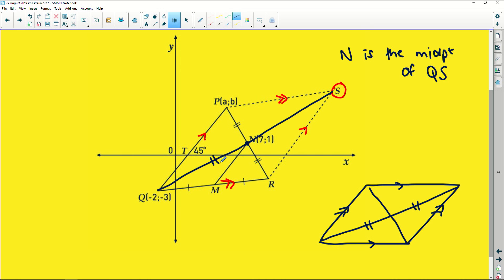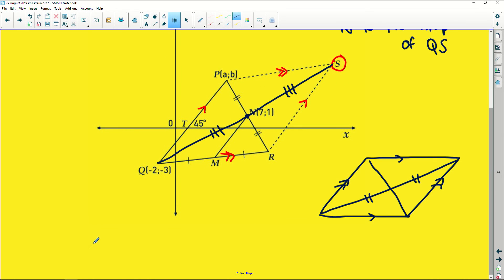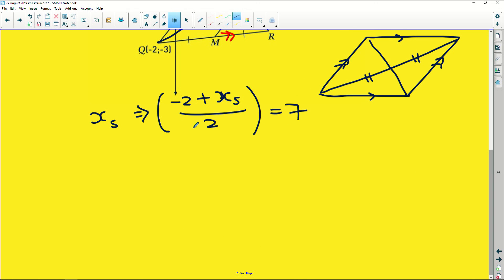So how do we apply that? Well, to find the X value at S, we know that by midpoint theorem, negative two plus the X value, X at S divided by two is going to give us seven, the X value of the midpoint. So if we solve for X of, or the X value at S, we multiply it by two, so we get negative two plus XS is equal to 14, which means that the X value at S is 16.